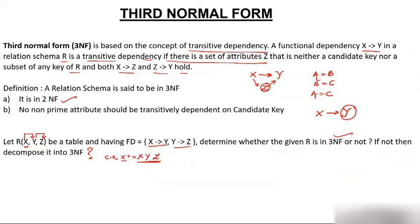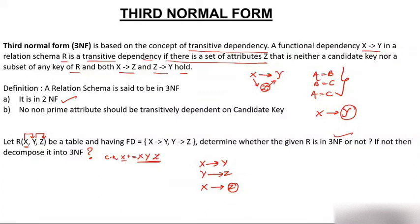Now let's check whether the functional dependencies are in third normal form. We have X→Y and Y→Z. Since both hold, we can derive X→Z by transitivity. Z is a non-prime attribute — the only prime attribute is X, so all others are non-prime. Z is transitively dependent on X, which violates 3NF. Therefore table R(X,Y,Z) with these functional dependencies is not in 3NF.